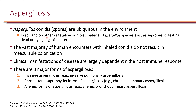Now, let's switch gears to aspergillosis. Aspergillus conidia or spores are ubiquitous in the environment — they're everywhere in the soil and in any moist material, especially decaying organic material. The primary route of infection is through inhalation. Pretty much most aspergillosis infections are pulmonary aspergillosis, although extra-pulmonary aspergillosis can occur, but it's not as common.